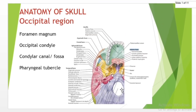The foramen magnum is a large oval opening in the occipital bone of the skull, present in humans and many other animals. It is one of several oval and circular openings (foramina) in the base of the skull. The occipital condyles are rounded projections that articulate with the first cervical vertebra, attaching the head to the body. The condylar canal transmits an emissary vein providing a venous connection between the extracranial venous system and the intracranial venous sinuses. It can also act as a channel for the spread of infection.